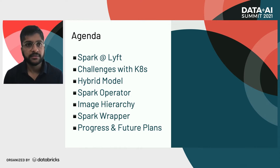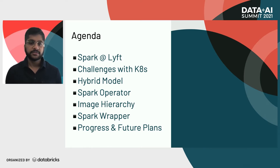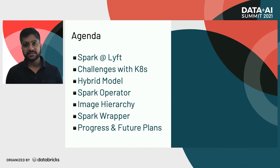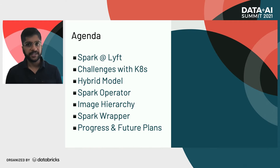Let me briefly walk you over our agenda today. First, I'll give you context about Spark at Lyft — who our users are and how it's used. Next, I'll share the evolution of our Spark architecture over a couple of years, and how we arrived at Spark on Kubernetes today. Then I'll cover the major challenges with the Kubernetes model. My colleague Kathleen will then share the hybrid approach we've come up with using Kubernetes and Yarn, covering internal tooling for image management, conflict management, Spark operator usage, and our progress and future plans.